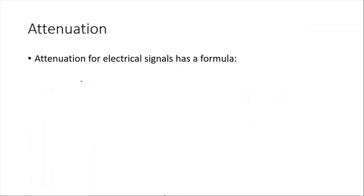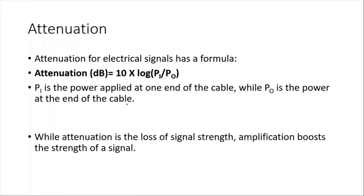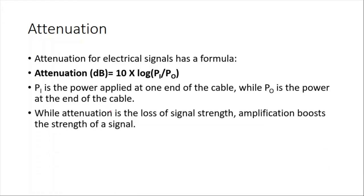We have a formula for the attenuation of electrical signals. Attenuation can be calculated by 10 times the logarithm of P1 divided by P0, where P1 is the power applied to one end of the cable and P0 is the power at the other end. While attenuation is the loss of signal strength — the amplitude and power of the signal decreases — we have amplifiers to counter this.